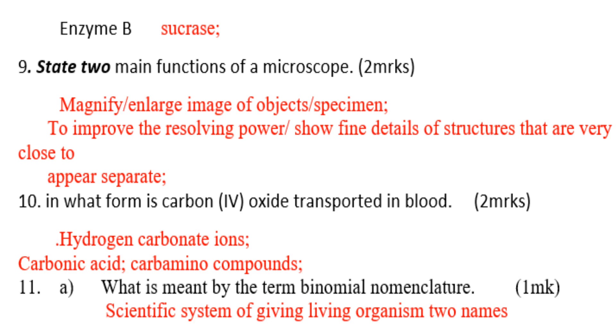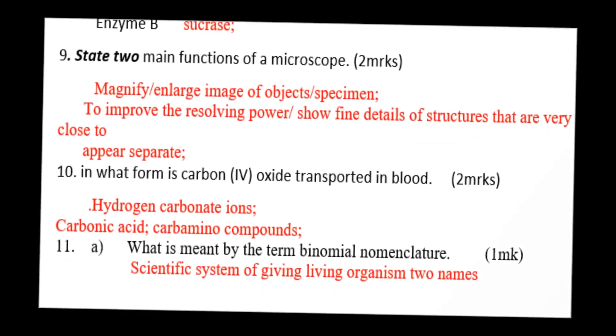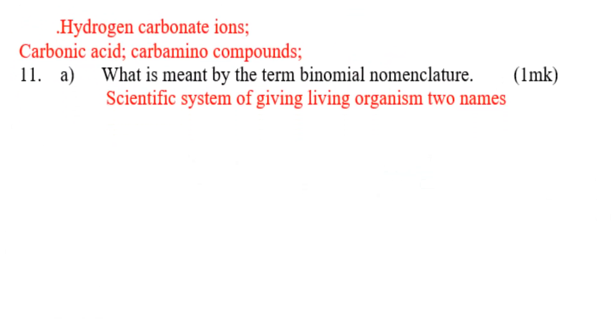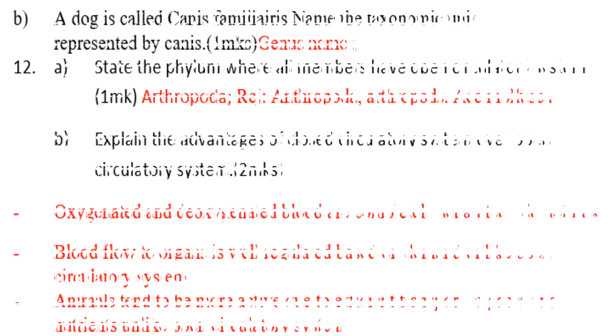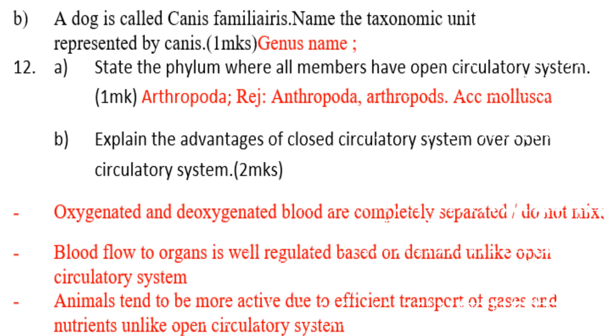Number 11: what is meant by the term binomial nomenclature? Binomial nomenclature is giving an organism two names — that is the genus and species. Name the taxonomic unit represented by Canis: Canis is a genus name.